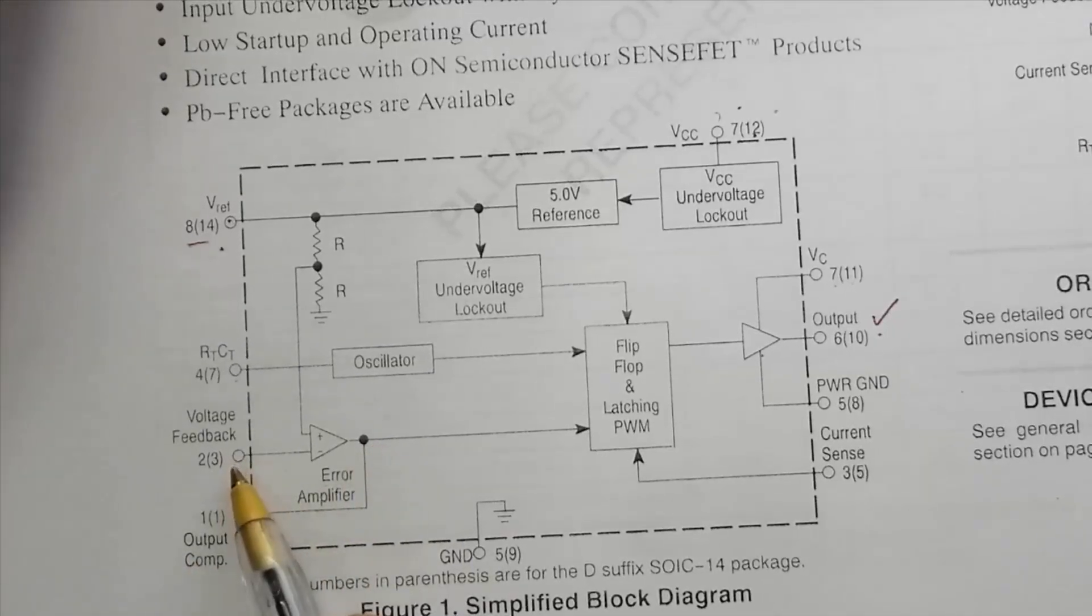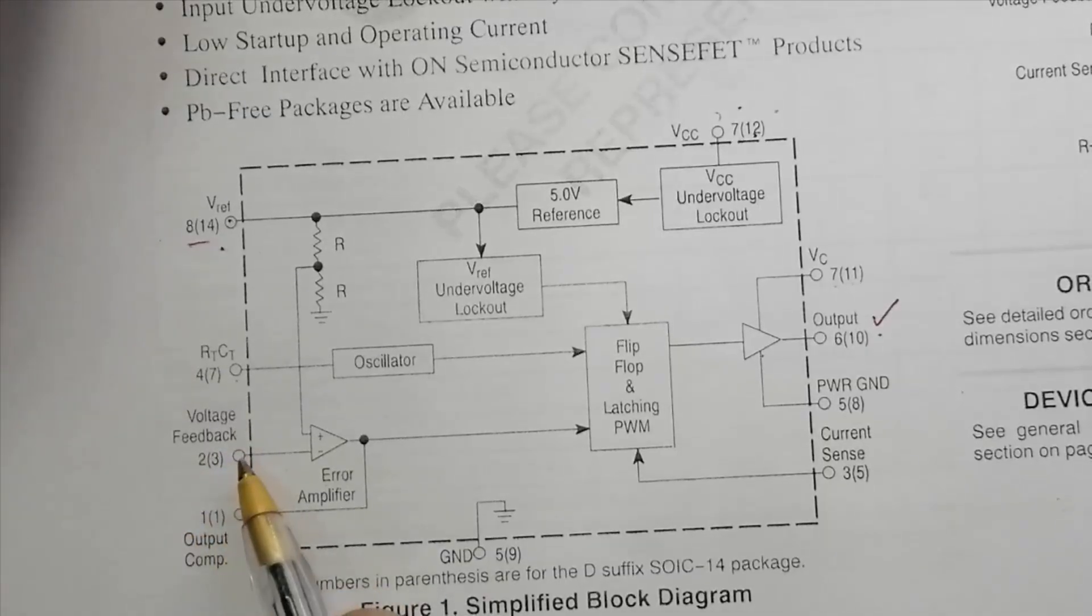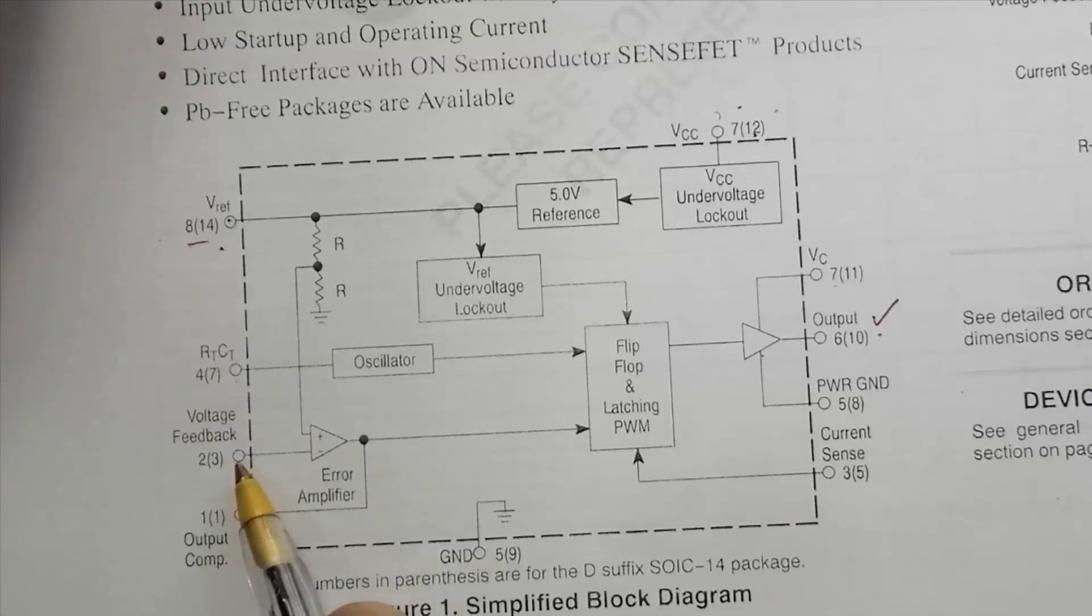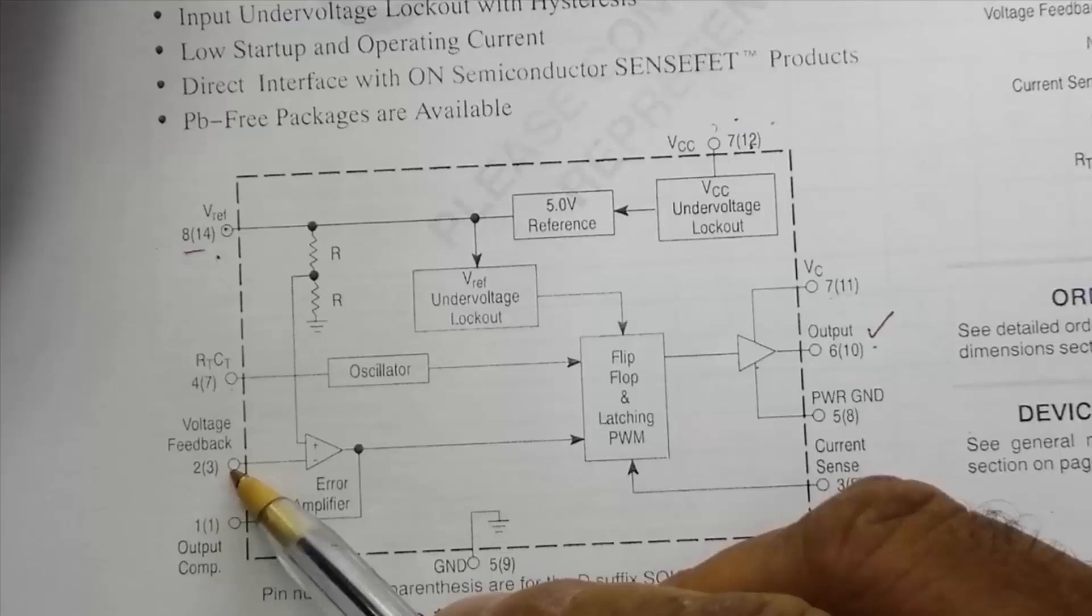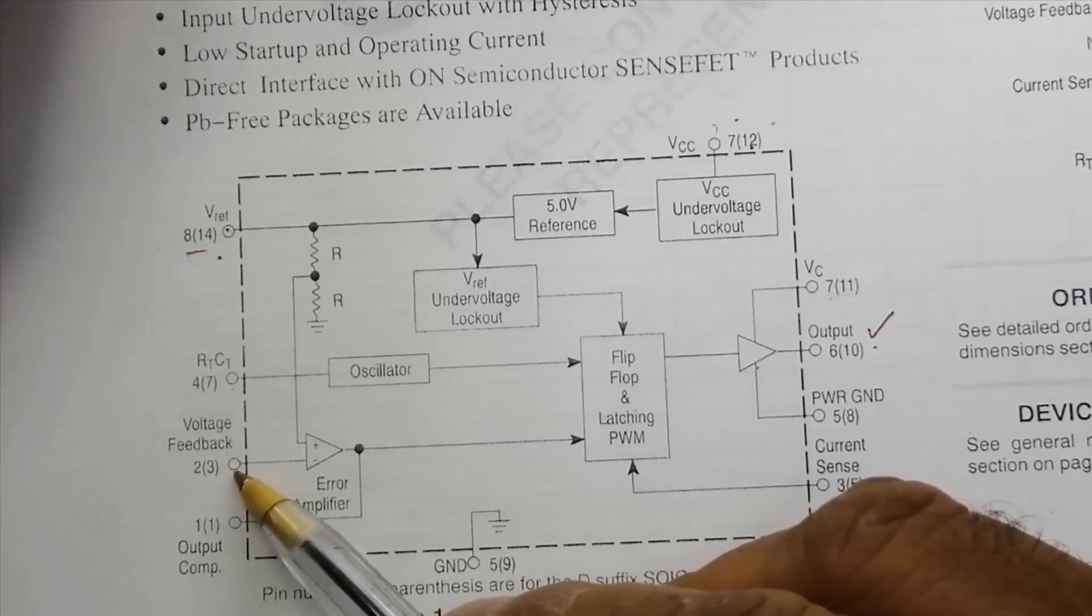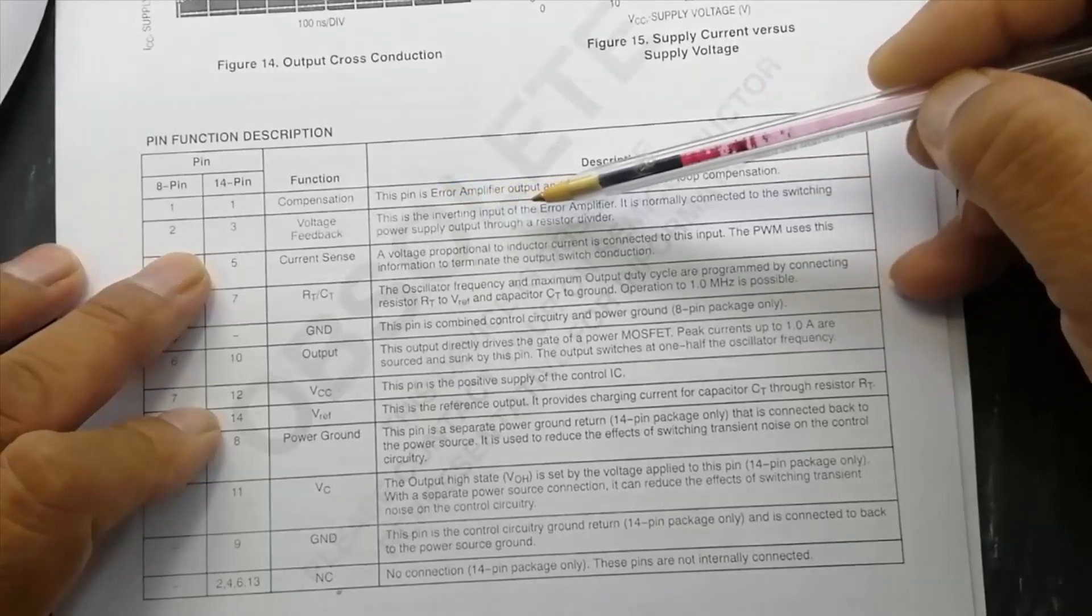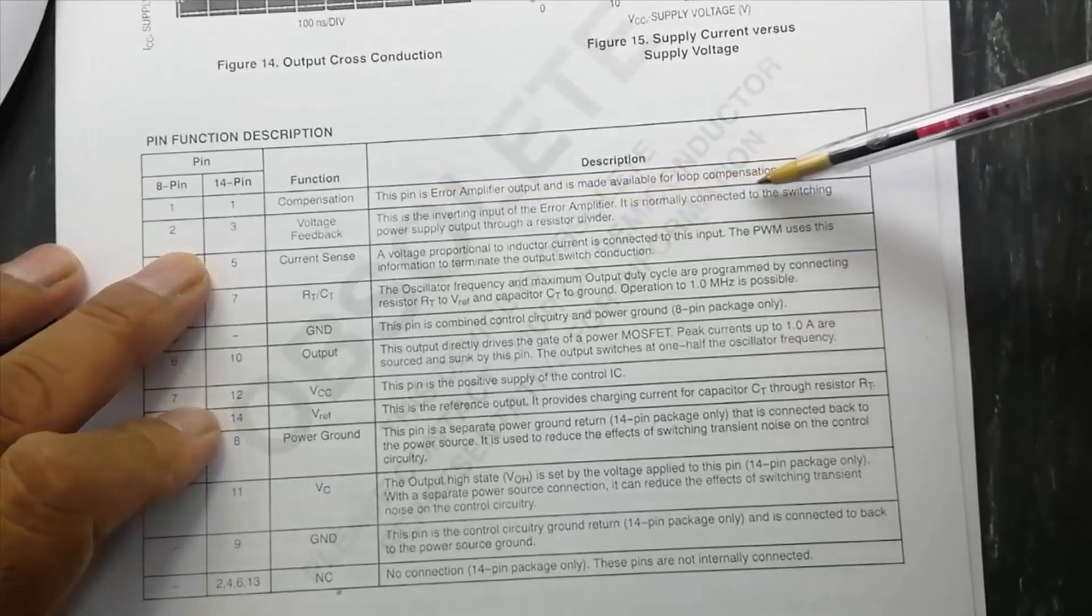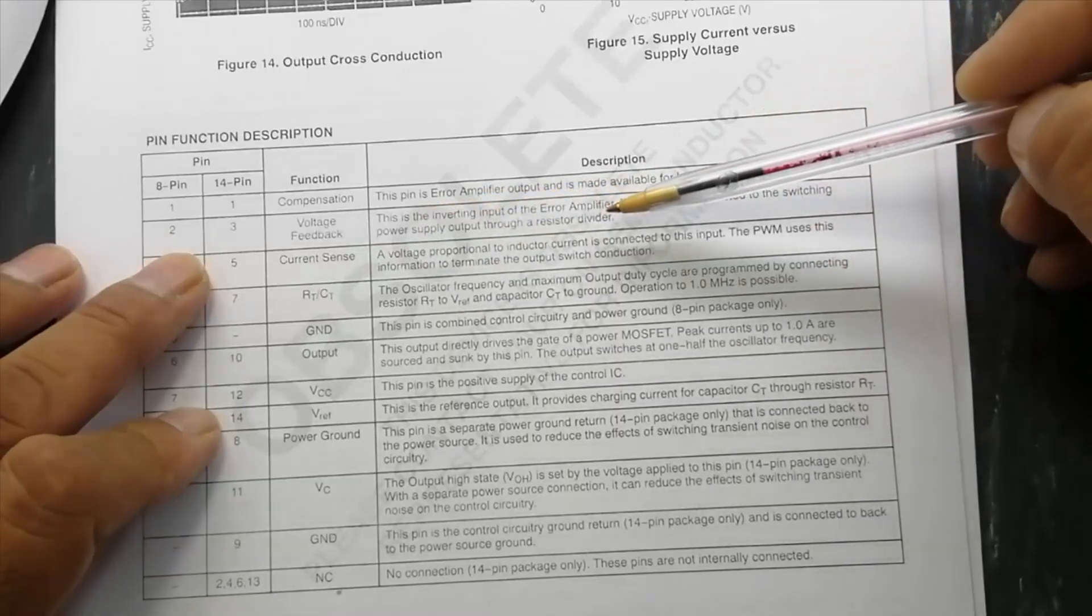So these two pins are compensated by external resistor, pin number 2 and pin number 3. Sometimes if we are using optocoupler, then optocoupler will be connected to pin number 2 feedback pin and compensation pin. This is inverting input of error amplifier.